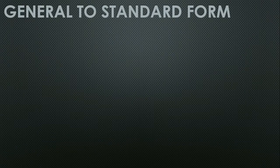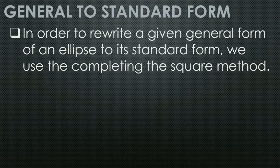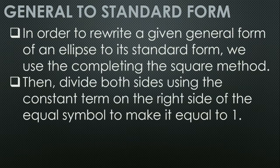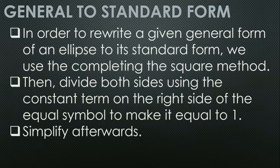Converting general form of an ellipse to its equivalent standard form. We use the completing the square method, then divide both sides by the constant on the right side to make it equal to 1, and simplify. This method is also used for parabolas and circles, but in a different process here.